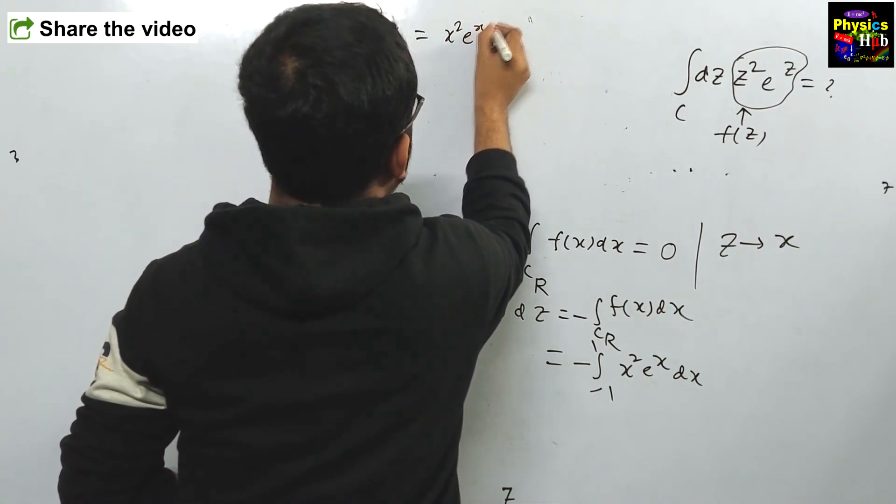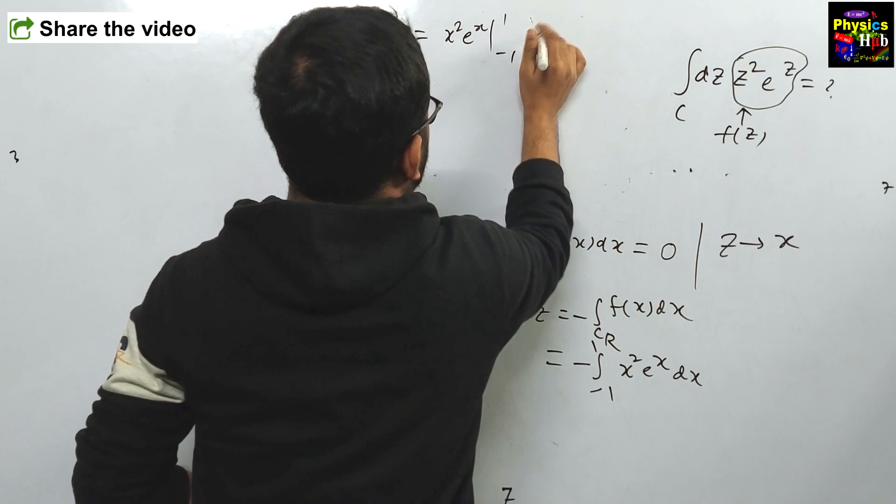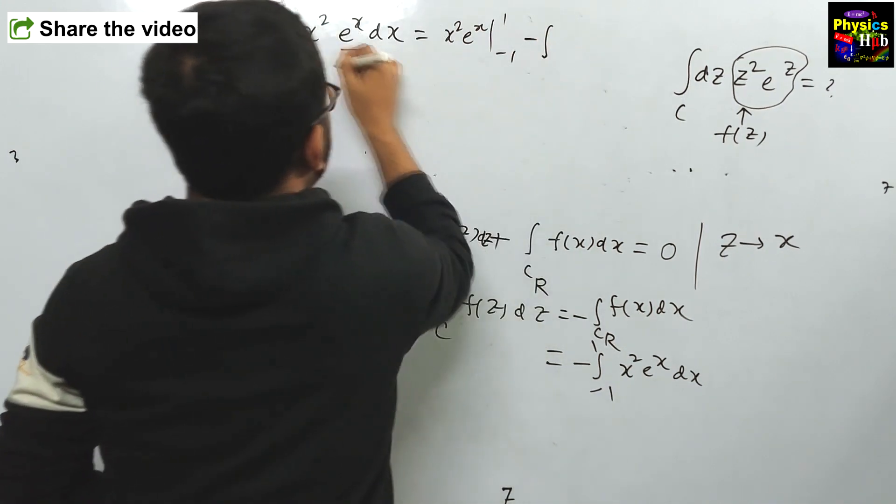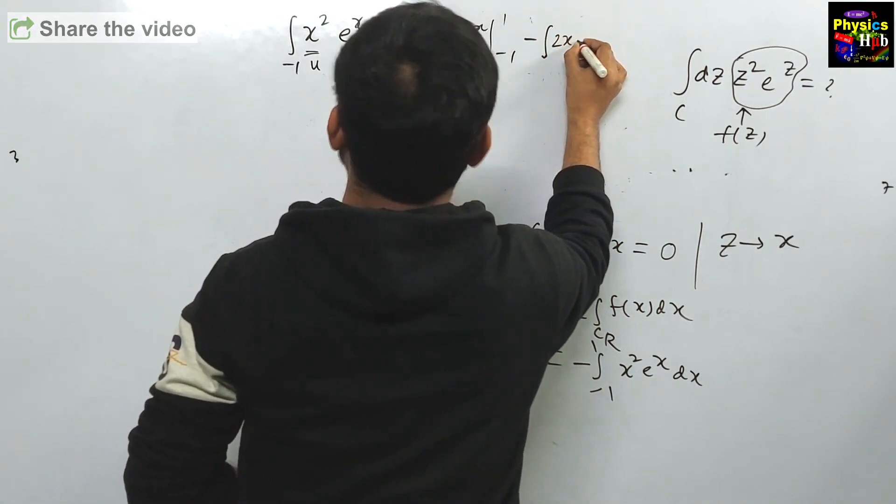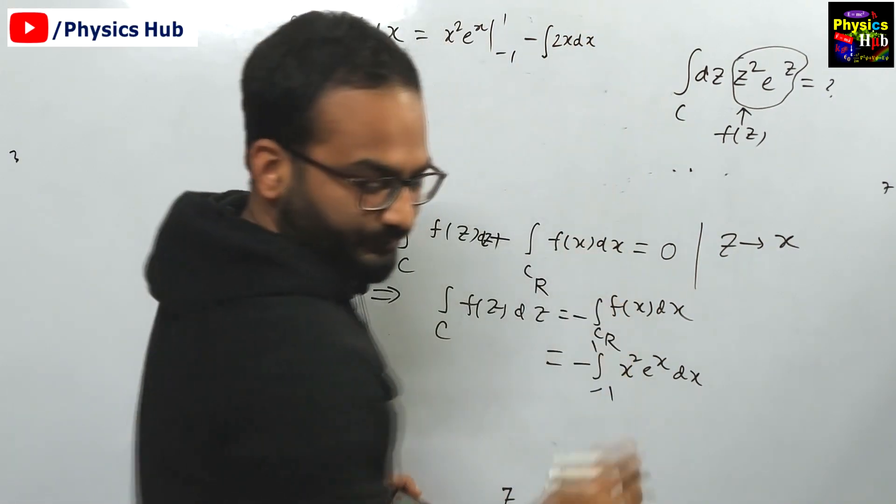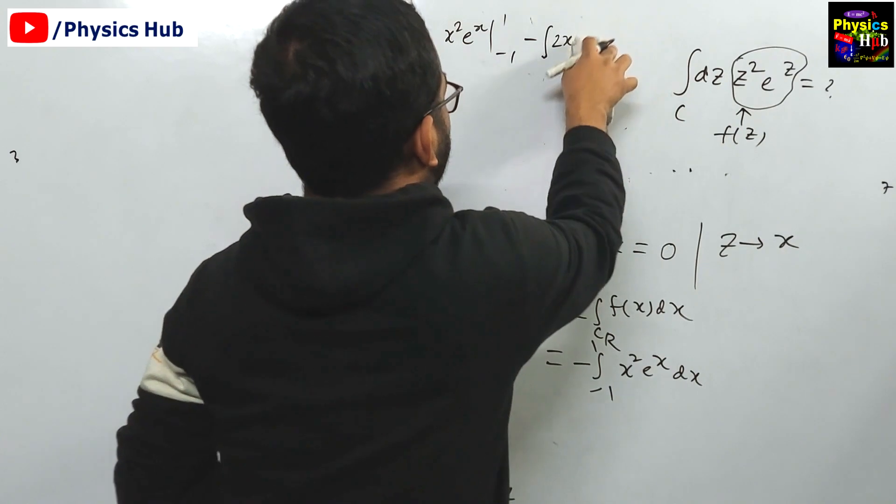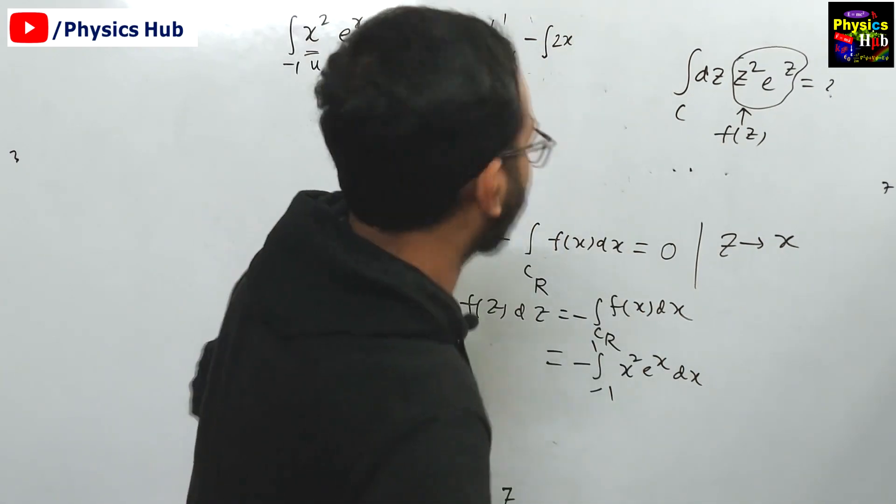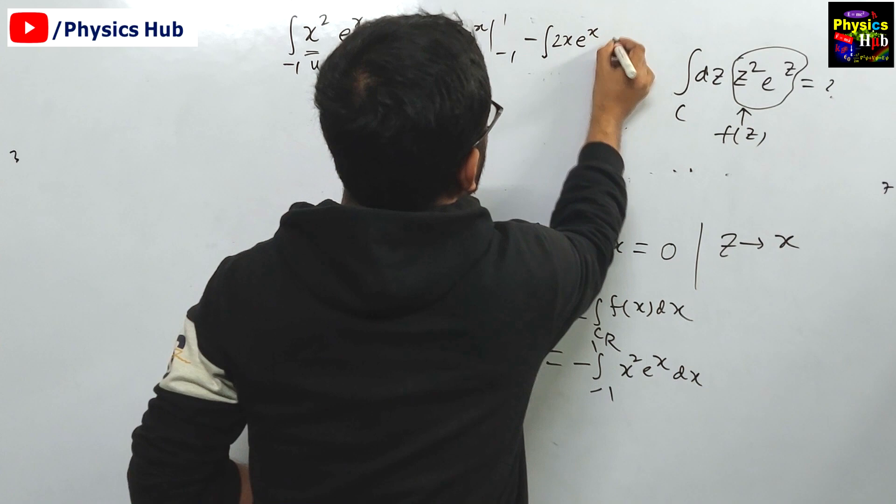u integration v dv. So, x² e^x, integration from -1 to 1, minus integration du is 2x dx, and u integration dv is 2x and e^x dx.